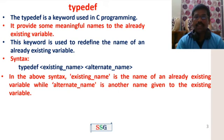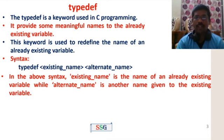Syntax: typedef [existing name] [alternate name]. The existing name is the name of an already existing variable or data type, while the alternate name is another name given to the existing variable. You can then use the alternate name in place of the existing name.